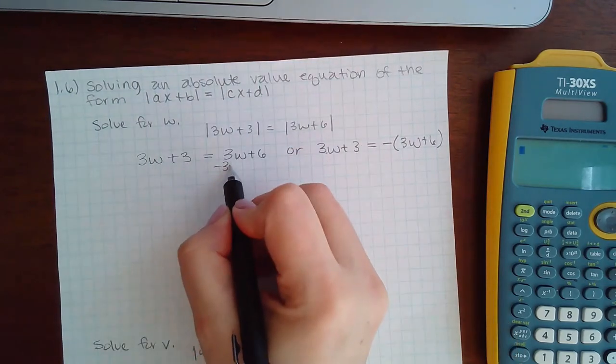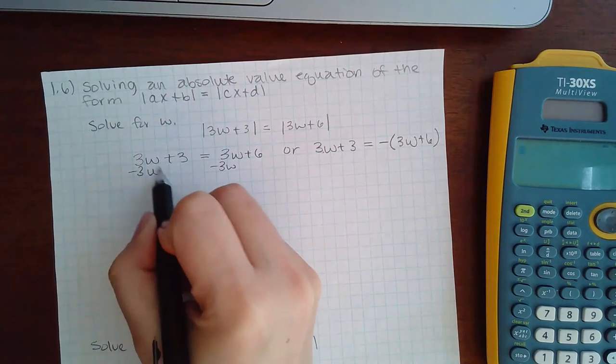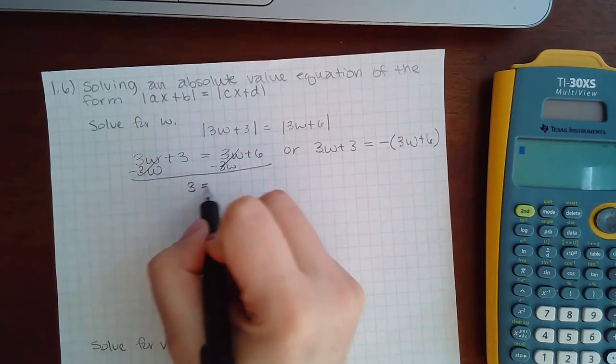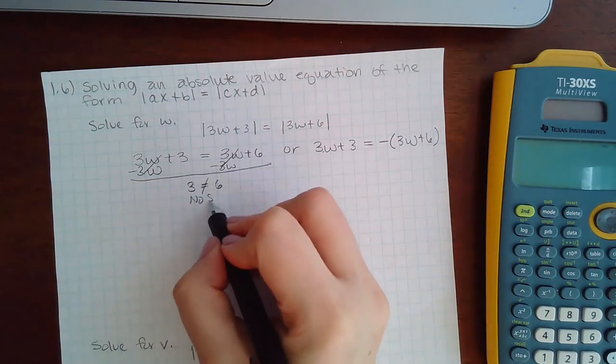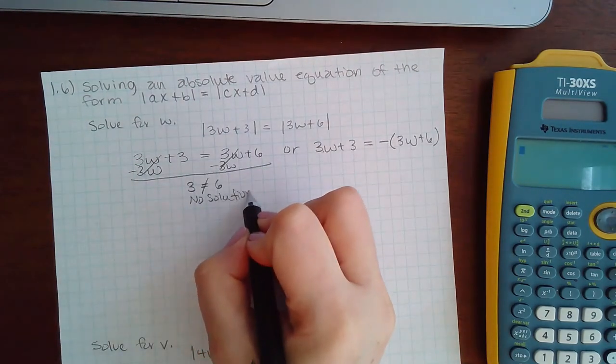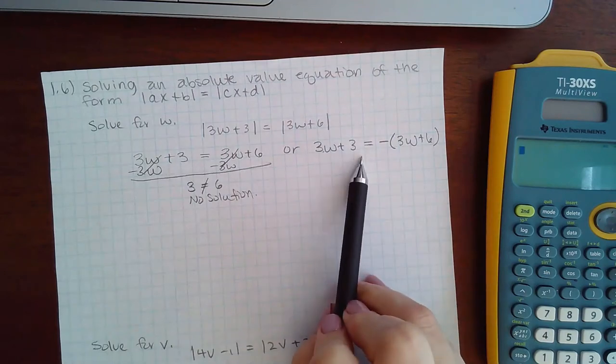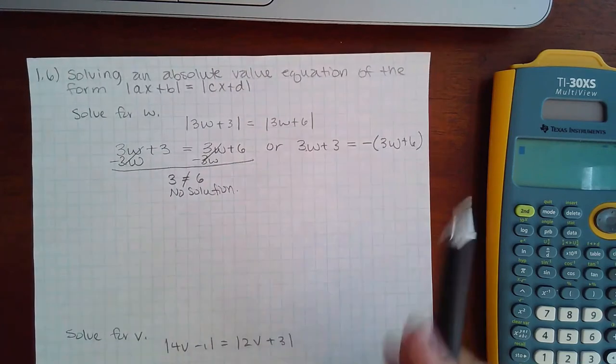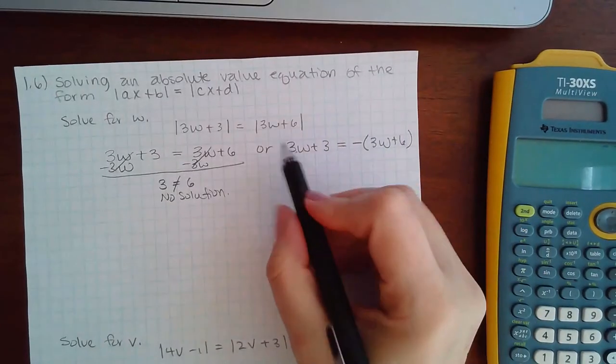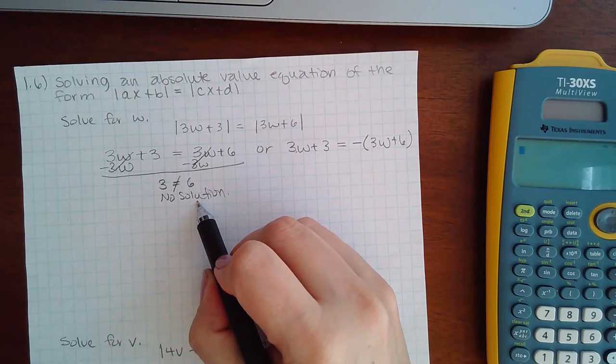So here I would subtract 3w from both sides and I would get 3 equals 6, which we know is false, so there is no solution here. But because I do have a second equation to try to solve, this is not my final conclusion. Let's go ahead and continue solving over here.